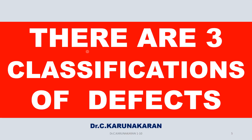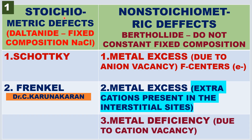There are three classifications of defects. The first classification is stoichiometric defects and non-stoichiometric defects. In stoichiometric defects, there are two types: Schottky defects and Frenkel defects. In non-stoichiometric defects: metal excess due to anion vacancy, metal excess due to extra cations present in the interstitial site, and metal deficiency due to cation vacancy.